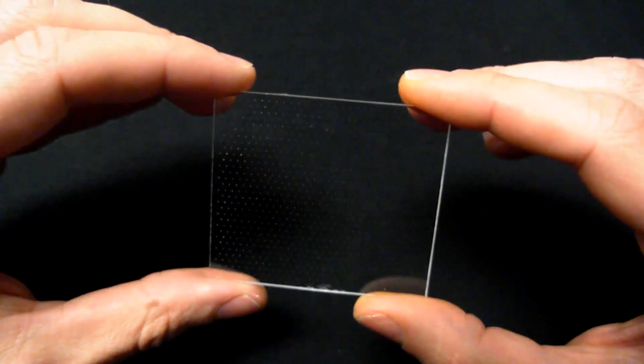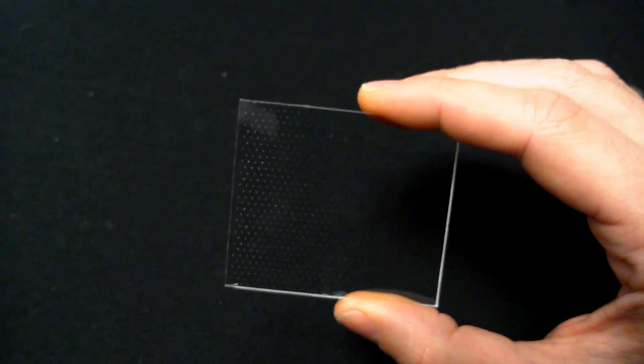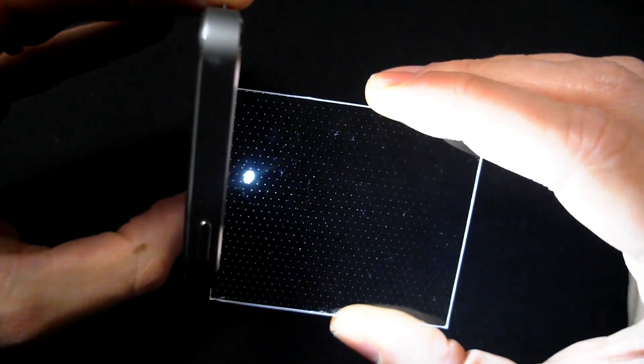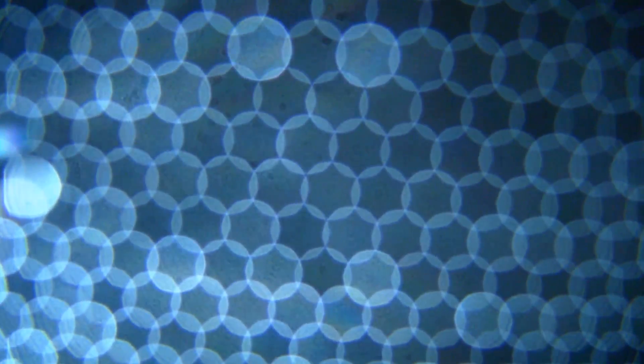An etched waveguide, which is transparent, creates a series of bright point light sources when edge illuminated. When held near the eye, the defocused point sources tile the viewing plane.